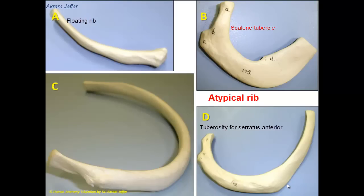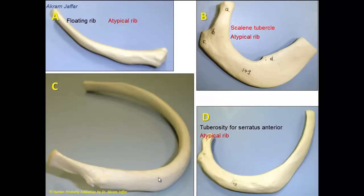Atypical ribs include the first rib, second rib, and the 11th and 12th ribs. So ribs A, B, and D are atypical ribs. The rib in C is a typical rib — we can see that it has a head, a neck, a tubercle, an angle, a superior border, and an inferior border.